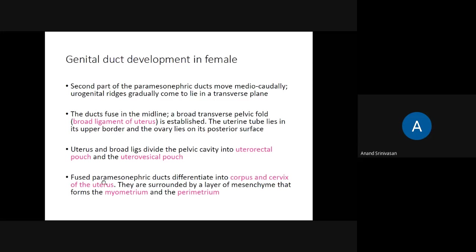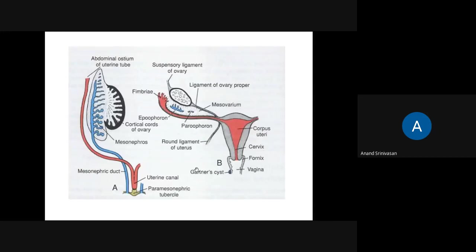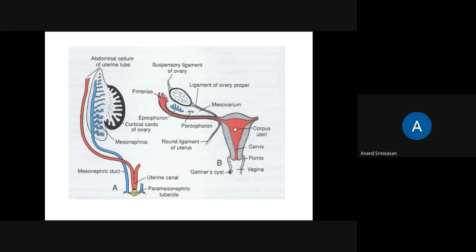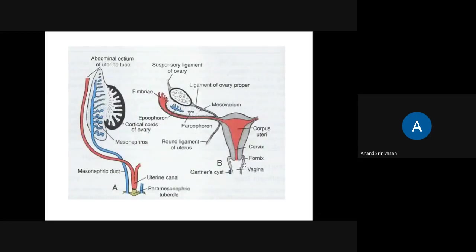The fused part of the paramesonephric duct gets surrounded by mesenchyme, and this mesenchyme helps in the formation of the myometrium and the perimetrium. The corpus is the frontal part of the uterus and the cervix is the lowermost part. The fused portion forms the uterus and the upper portion of the vagina. The surrounding mesenchyme develops into the myometrium and the outer perimetrium.